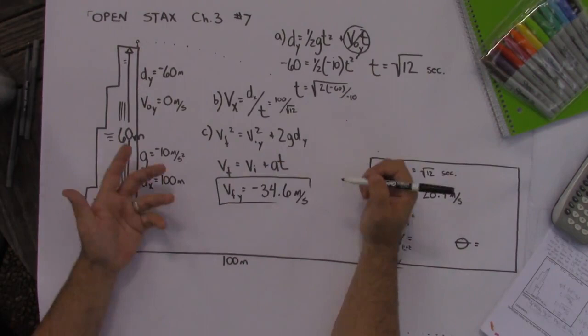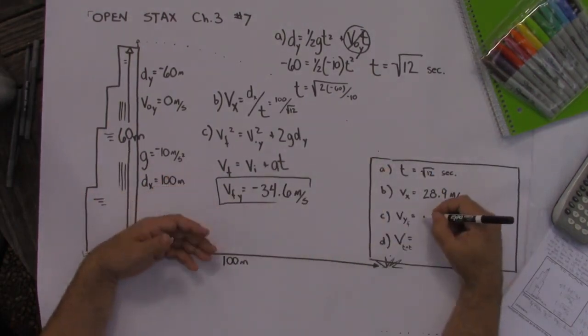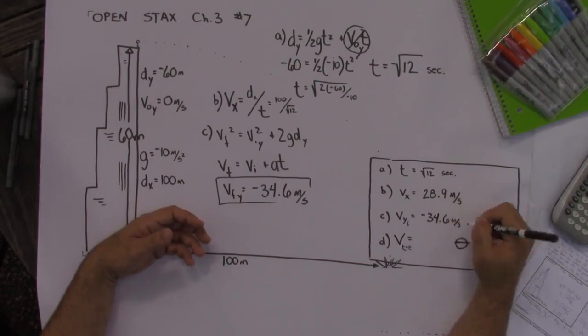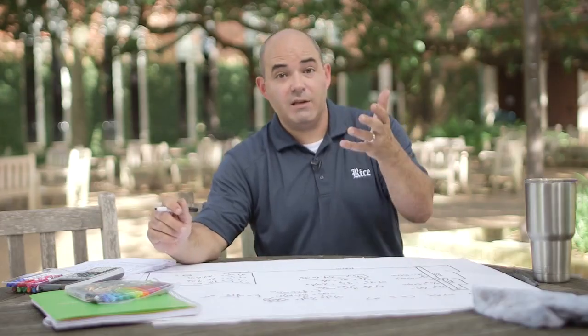Now the negative just lets me know it's in the down direction. So put that over here. I got negative 34.6 meters per second.